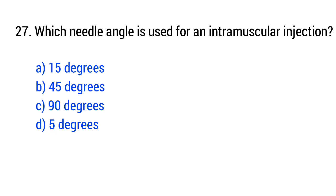Question 27. Which needle angle is used for an intramuscular injection? The right answer is option C: 90 degrees.